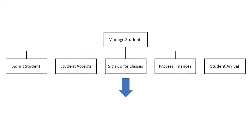Here is an example of a hierarchical top-down design for a student management system. At the top level, we have the box 'Manage Students.' The design for this breaks down into five steps: admit students, student acceptance, sign up for classes, process finances, and student arrival.